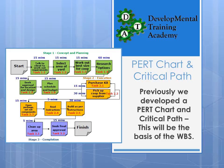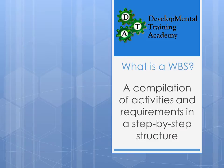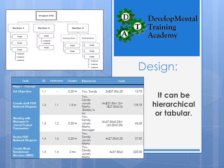Work breakdown structure is also commonly called a WBS. It is a compilation of activities and requirements in a step-by-step structure — essentially a framework for your project. There are a number of different ways to design it, and the two most common are the hierarchical structure or a tabular structure.